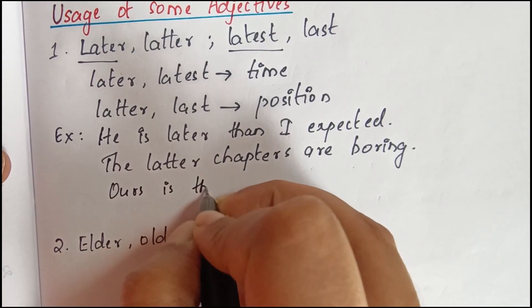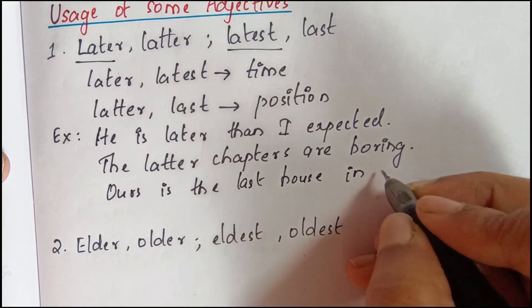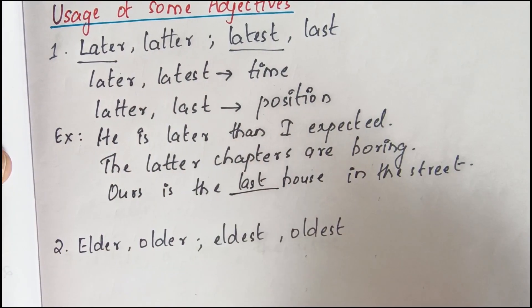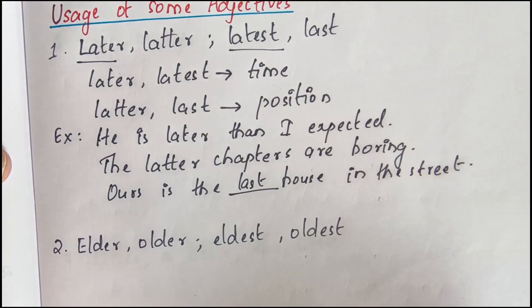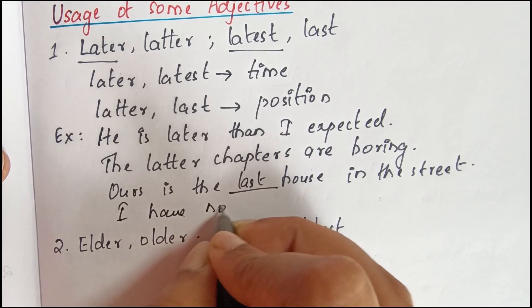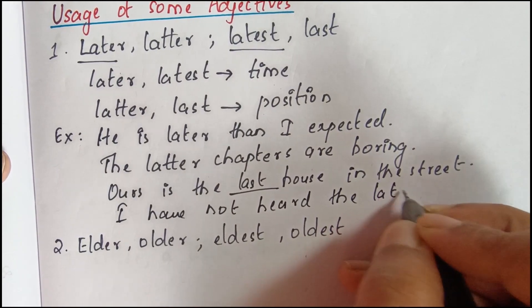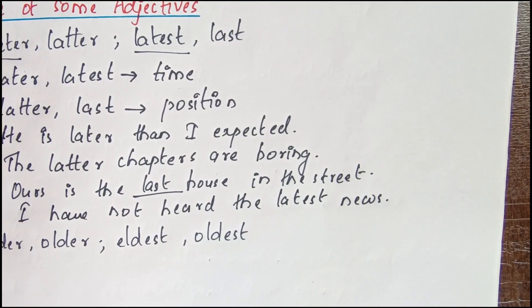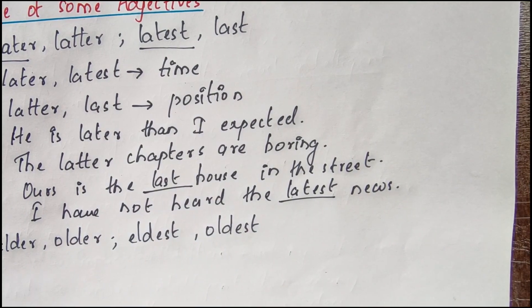For example: 'Ours is the last house in the street' — here, the position of the house is described using last. And for latest: 'I have not heard the latest news' — here, latest refers to the most recent in time.